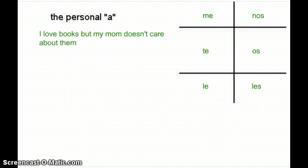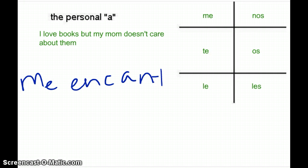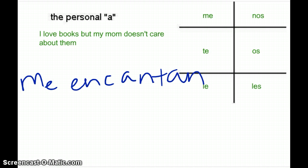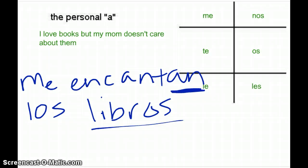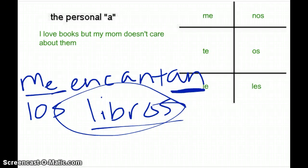Now we've got a bigger sentence: 'I love books, but my mom doesn't care about them.' First part: me encantan los libros. It ends in -an because los libros — the things that I love — is plural. The object of the sentence is the subject driving the verb, so the verb reflects libros and is plural. Me is obviously the person who loves them.